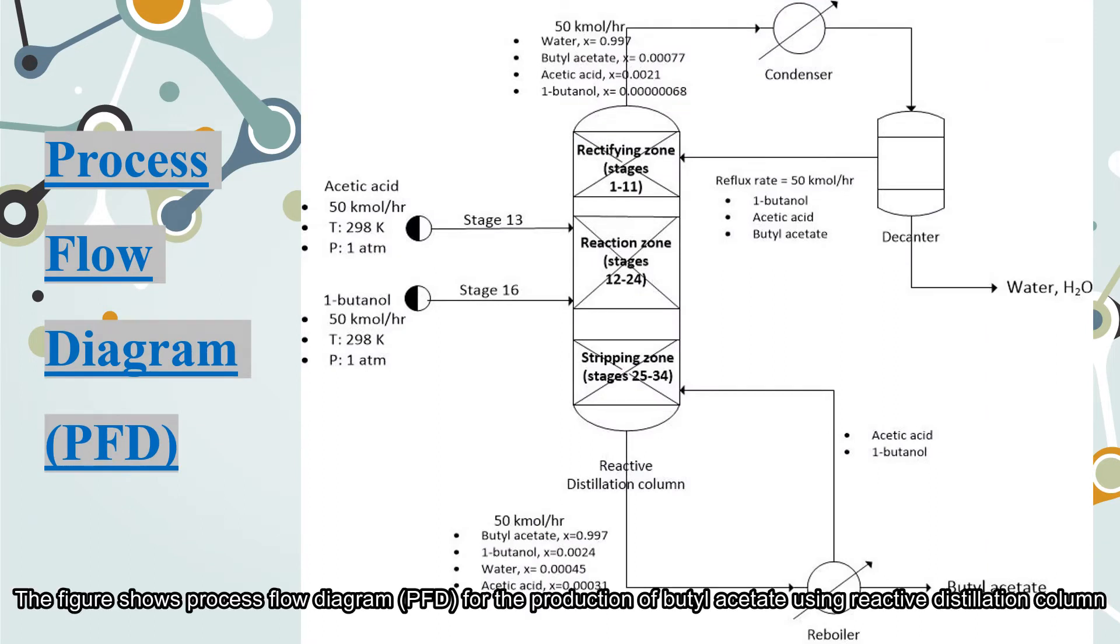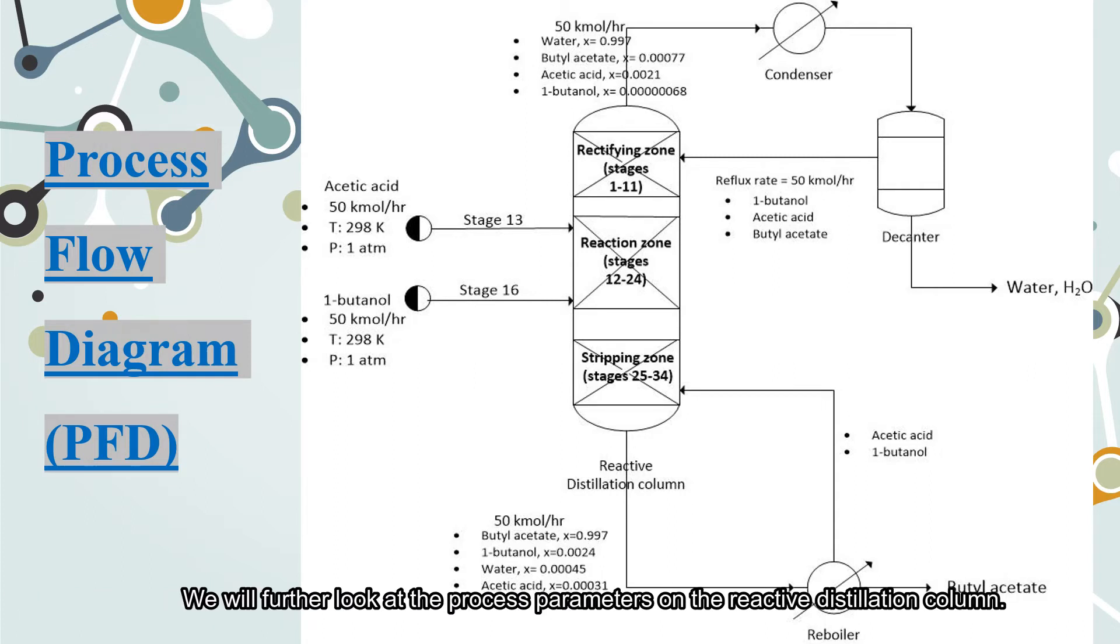The figure shows the process flow diagram PFD for the production of butyl acetate using reactive distillation column. We will further look at the process parameters on the reactive distillation column.